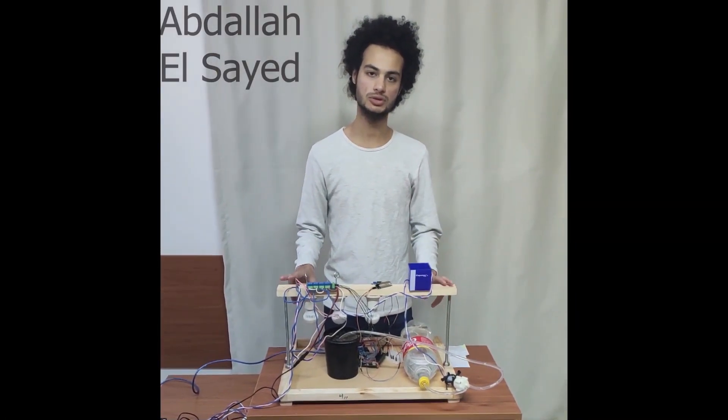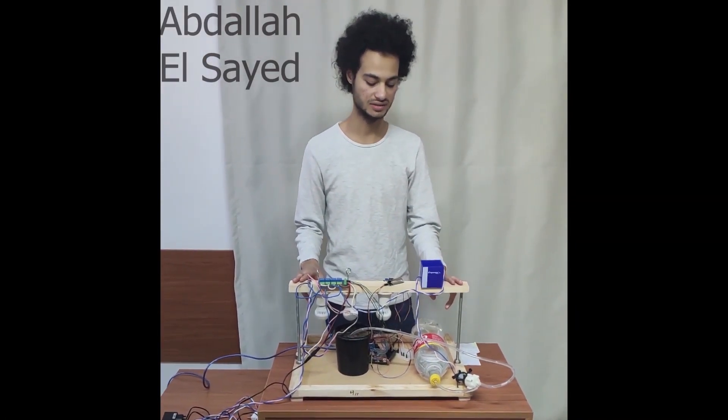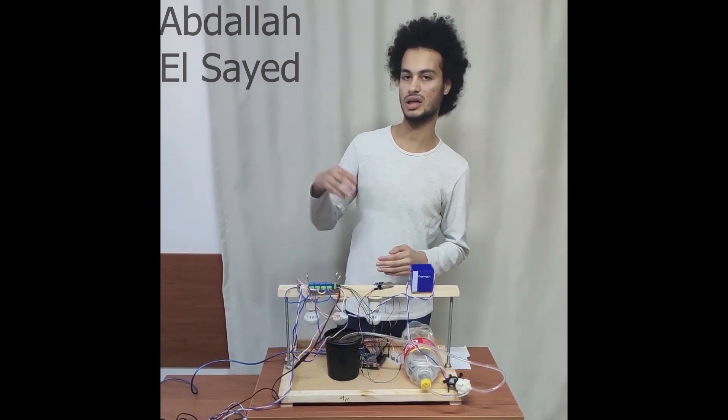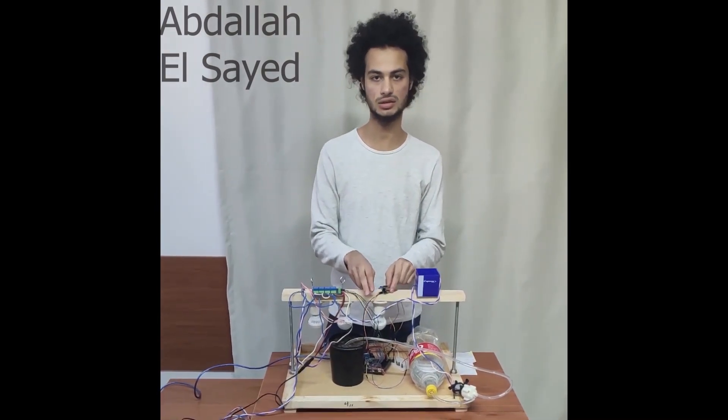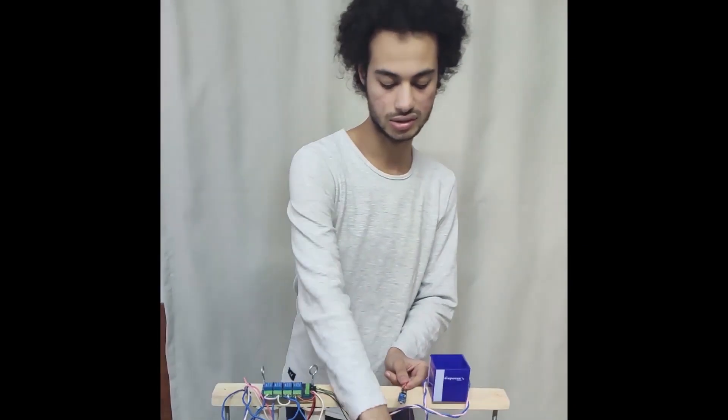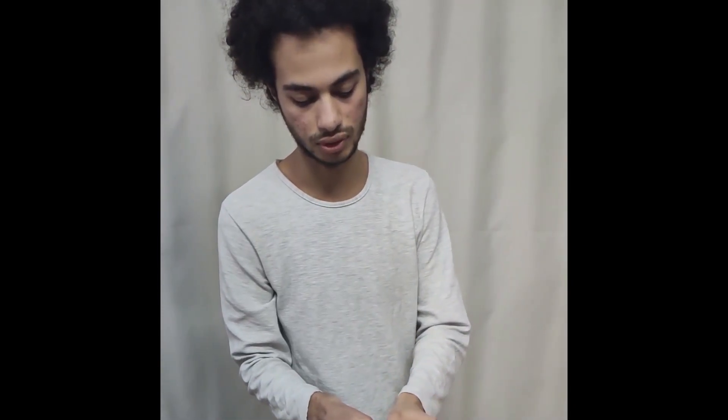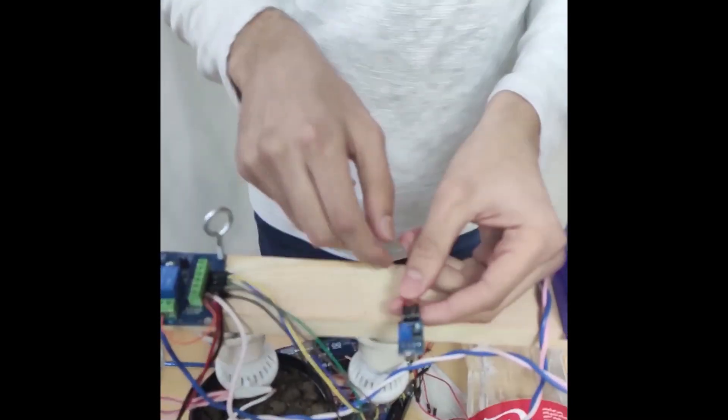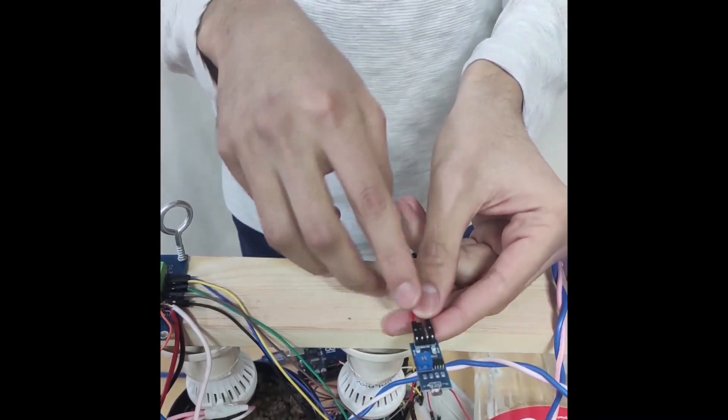We are using two sensors for this project. The first sensor measures the light intensity inside the room, and the other sensor measures the humidity inside the soil. Now we will talk about the structure of the two sensors and the pin assignments for both of them.